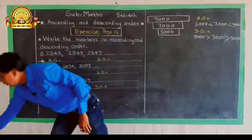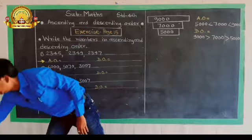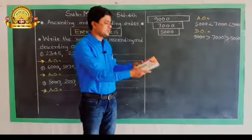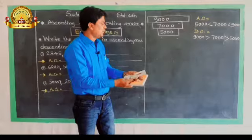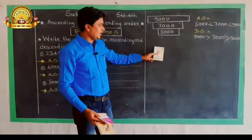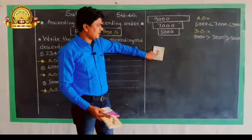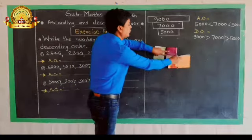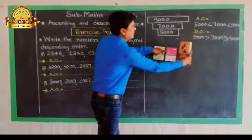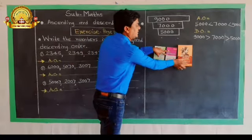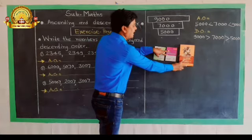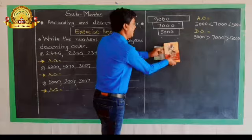Now I am going to take some books. In ascending order, this is the smallest book, and this is the biggest book, with the middle-sized one in between. Now I am going to arrange some books in descending order — from biggest to smallest.